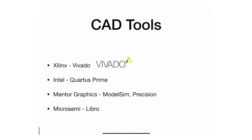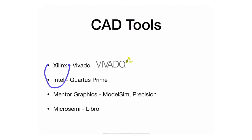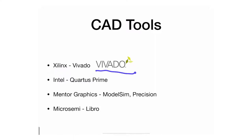There are a few CAD tools available, depending on the manufacturer. Xilinx produces Vivado, Intel produces Quartus Prime, Mentor Graphics produces ModelSim Precision, and Micro Semi produces Libero. Micro Semi is a third big player in the FPGA space, but Xilinx and Intel are the major ones. Because we are using a Xilinx FPGA, we will be using Vivado throughout the semester.